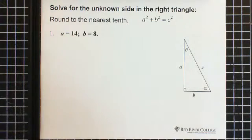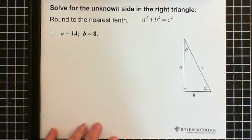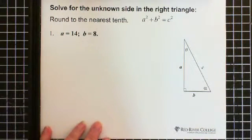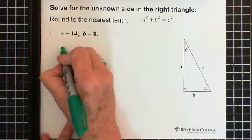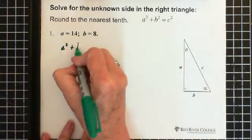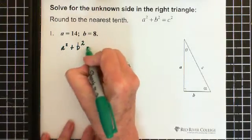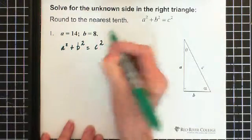All right, here we go. We're solving for c, so we're going to use Pythagoras: a² + b² = c².